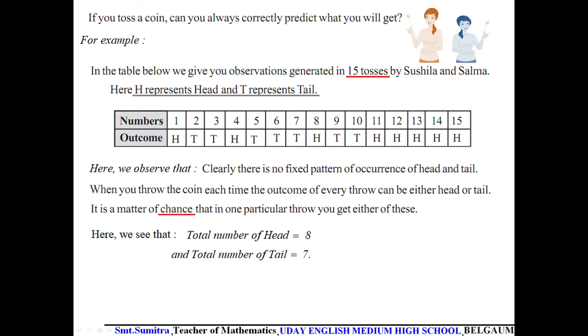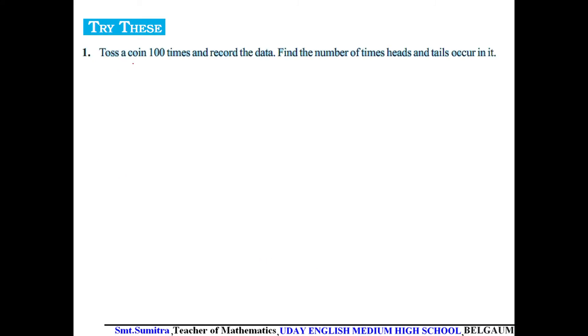The total number of tails is 7. Please copy the notes. Now try this activity: toss a coin 100 times and record the data. Find the number of heads and tails in this event.